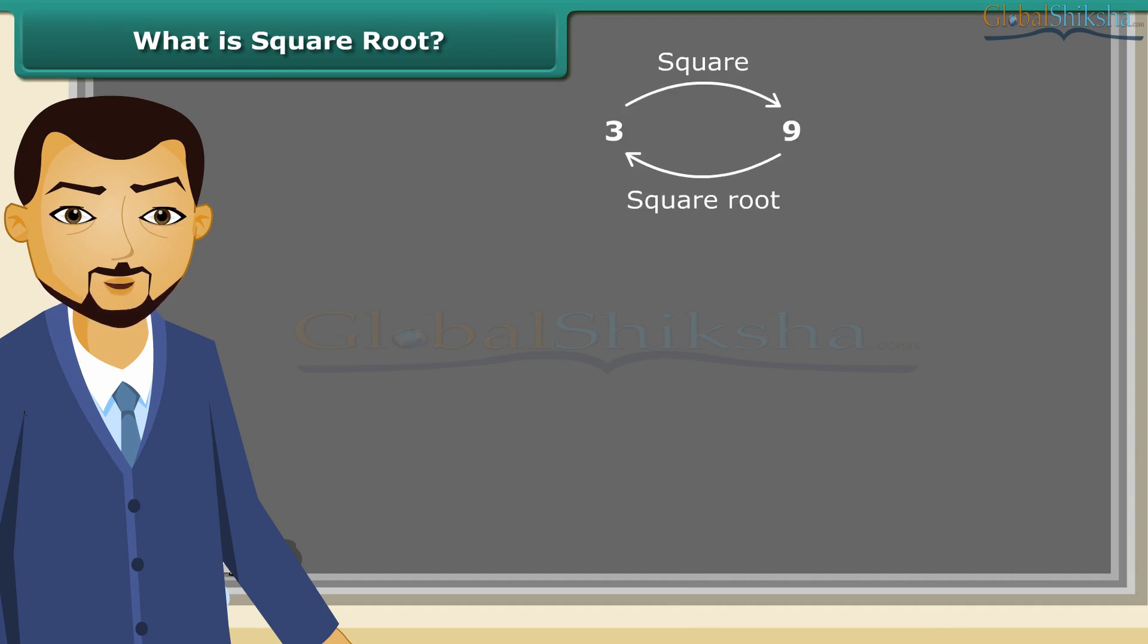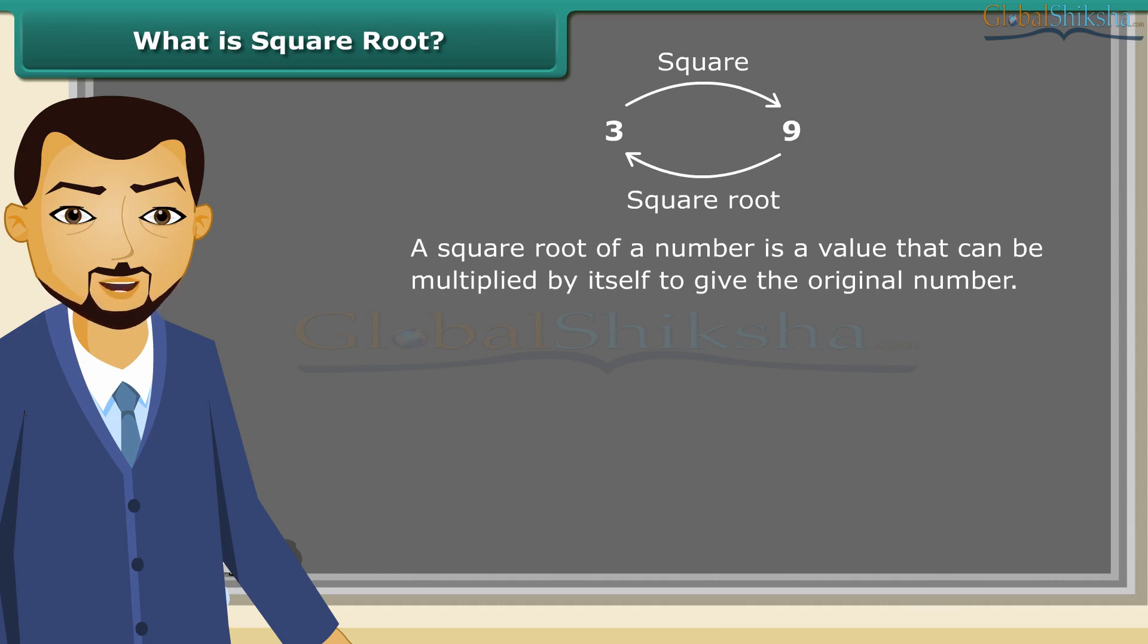Square root is an inverse operation of squaring. It is a value that can be multiplied by itself to give the original number. So, we can say when 4 is multiplied by 4, we get 16 which means 4 is a square root of 16. Square root is represented by a special symbol. It is called the radical. We can use it like this. Square root of 25 is 5.